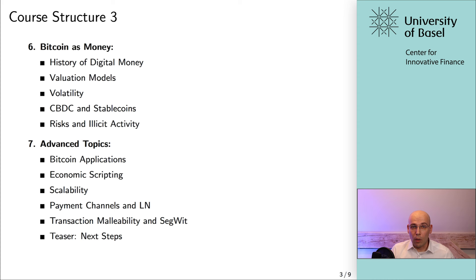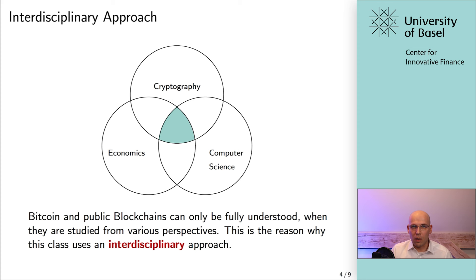Finally, in section seven we will tackle advanced topics such as economic scripting, segregated witness, transaction malleability, and of course scalability with a particular focus on payment channels and the Lightning Network. As you can see, this course will be a mixture of economics, computer science, and cryptography — and that is exactly what you need to truly understand this interesting topic. If and only if you have learned the basics of all of these disciplines will you be able to understand and appreciate this innovation.